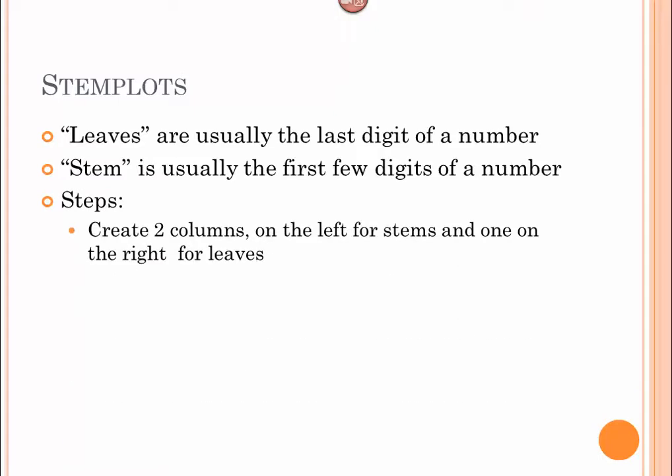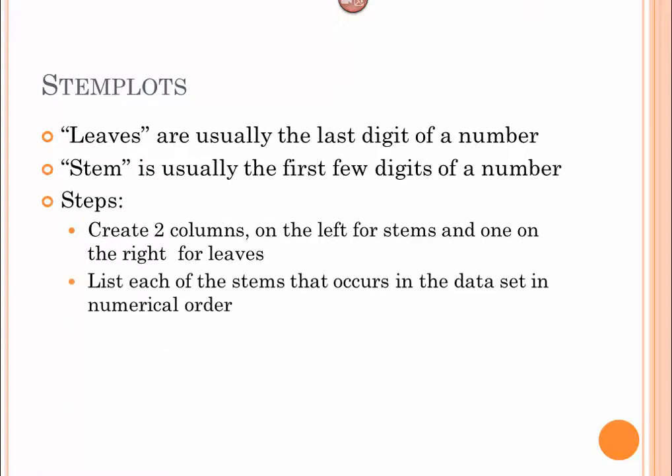Steps. Number one, we're going to create two columns, on the left side for stems and on the right side for leaves. Second, we're going to list each stem as it occurs in the data set in numerical order. And then we're going to go through and systematically put each leaf next to its stem.